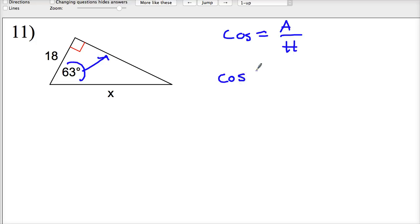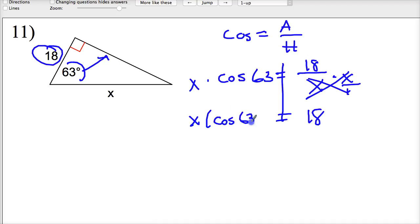Your general thought when you first start doing these is multiply by 18 and I'm good to go. Wrong. This problem is not set up that way. You're solving for x. The only thing you can really do is get rid of the divide by x by multiplying both sides by x. Those cancel. You get 18 here. And x times the cosine of 63 degrees. I need to get rid of times cosine 63 by dividing by cosine 63.